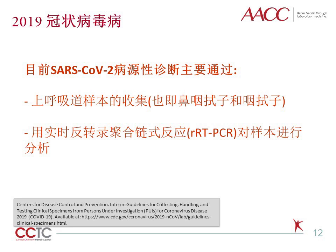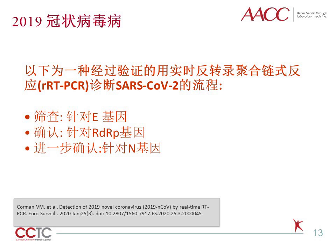目前SARS-CoV-2的病原性诊断主要通过采集上呼吸道样本，一般是鼻咽拭子和口咽拭子，然后用实时反转录聚合酶链式反应（RT-PCR）对样本进行分析。其中一种经过临床验证的诊断流程是基于三个连续的RT-PCR步骤：先用E基因作为筛查检测，然后用RdRp基因作为确认，最后用N基因进一步确认。（SARS-CoV-2 diagnosis uses upper respiratory samples—nasopharyngeal and oropharyngeal swabs—analyzed by RT-PCR. A validated workflow uses three sequential RT-PCR steps: E gene for screening, RdRp gene for confirmation, and N gene for further confirmation.）